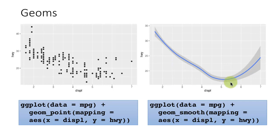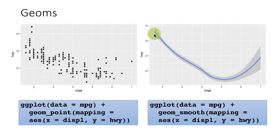Geom_smooth generates a smooth line. In the previous course, you encountered the regression line — a straight line drawn across a set of points. Geom_smooth, by default, doesn't draw the linear regression line. Instead, it draws what is called a locally smooth line. To get the value at a particular point, it considers only the points which are locally close to that point, averages them in some way, and generates this smooth line.